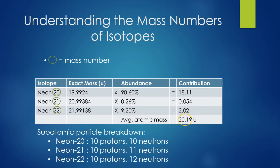For example, neon-20 has 10 protons because the atomic number of neon is 10 — just like all other neon isotopes. To figure out the number of neutrons, we determine what plus 10 equals that mass number. The isotopes occur in certain abundances. The number on the periodic table is the average atomic mass — a decimal, not a whole number. For neon, the average atomic mass is 20.19, calculated by taking all three isotopes and their abundances to get the average.